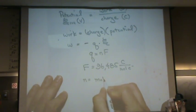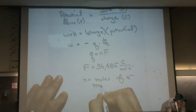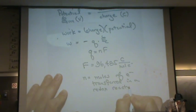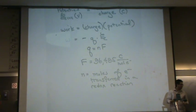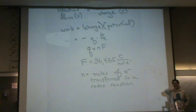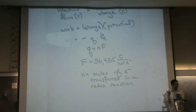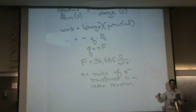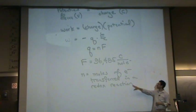N is the moles of electrons transferred in a redox reaction. It is moles like you think of in PV = nRT, but it's a specific type. When you write a redox reaction with reduction and oxidation and add those two half-reactions together, you have to cancel out the electrons. The number of electrons you cancel out on both sides is N. For example, in the previous question we did, two moles of electrons would have canceled on both sides, so N would equal two.